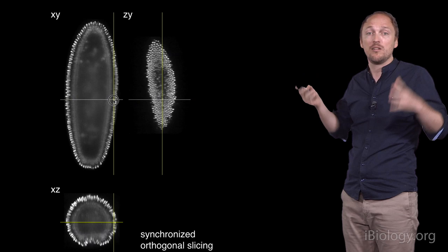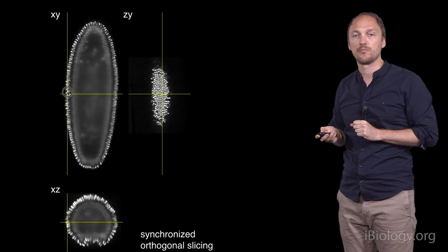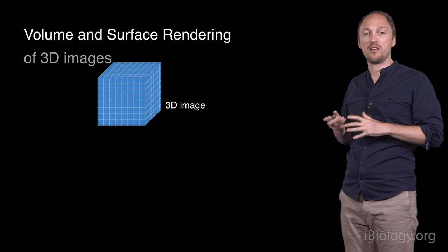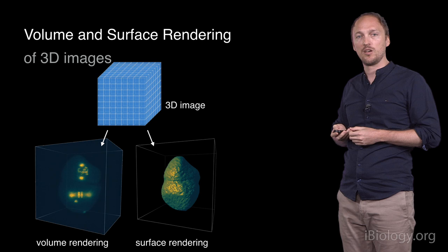Yet another approach is to simultaneously and interactively visualize three orthogonal slices, xy, xz, and yz, and all of that intersecting around a single point. We have just seen very simple schemes to visualize a three-dimensional dataset into a 2D screen. These schemes are unsatisfactory, as they don't convey the true three-dimensional nature of the data.